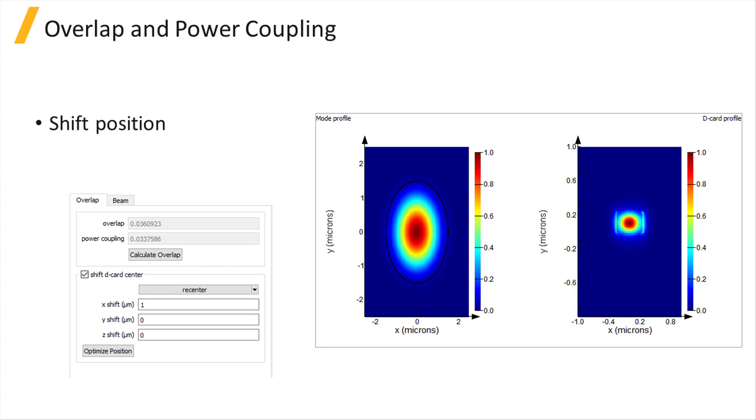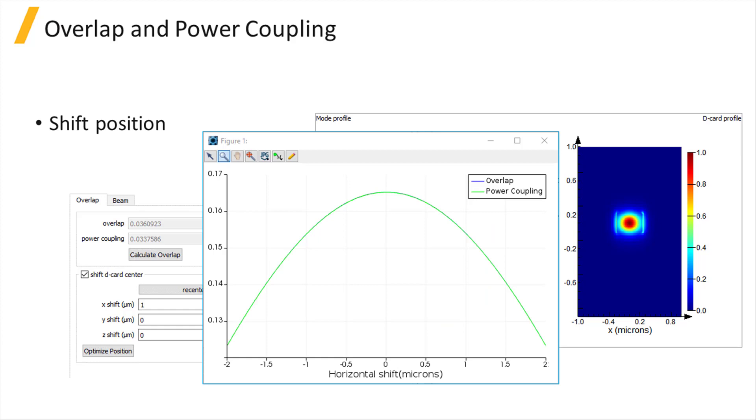It is possible to shift the relative position of the modes and get, for instance, a plot of the overlap versus the shift. Note that these features can be accessed both from the user interface and from the script commands.